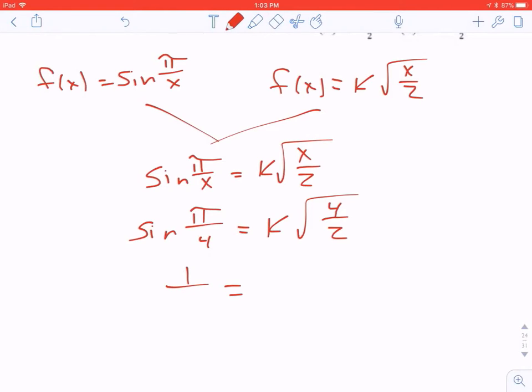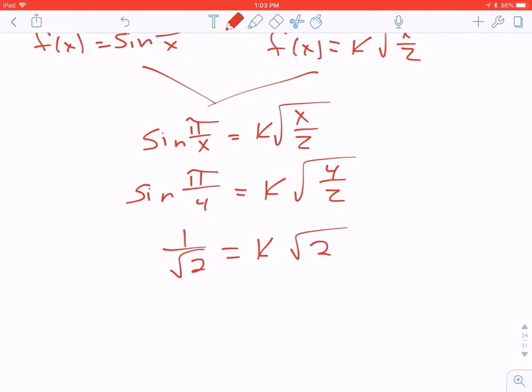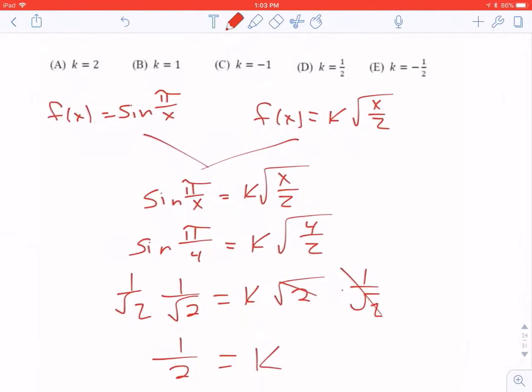Sine of pi over 4 is 1 over the square root of 2. Or if you prefer, square root of 2 over 2. The AP test doesn't care what format it's in. 4 divided by 2 is 2. To get k by itself, we could multiply both sides by 1 over the square root of 2. On the right side, you're left with the k. On the left, you end up with 1 over the square root of 2 times 1 over the square root of 2, which is 1 half. So that is answer D.